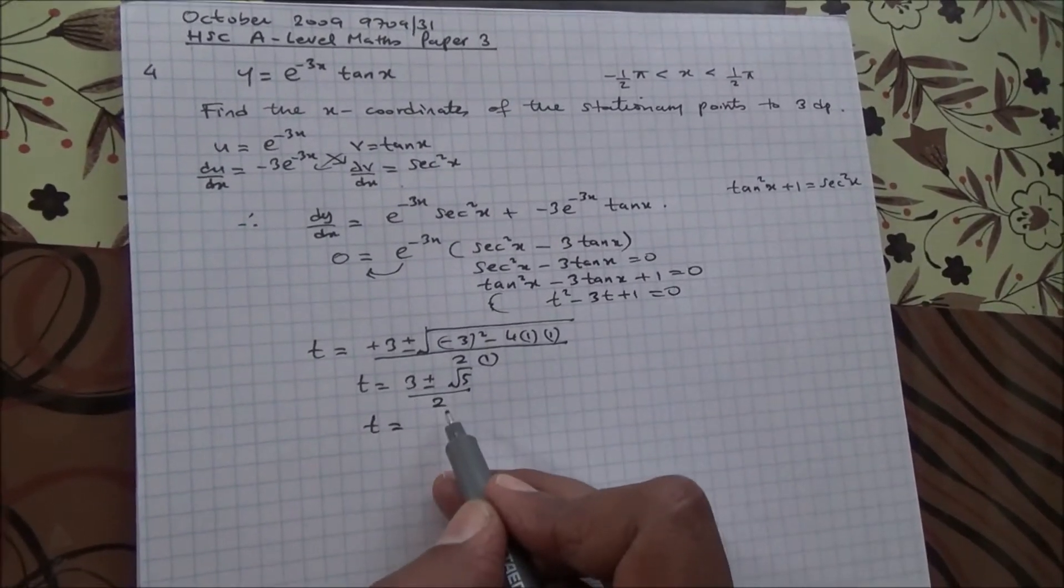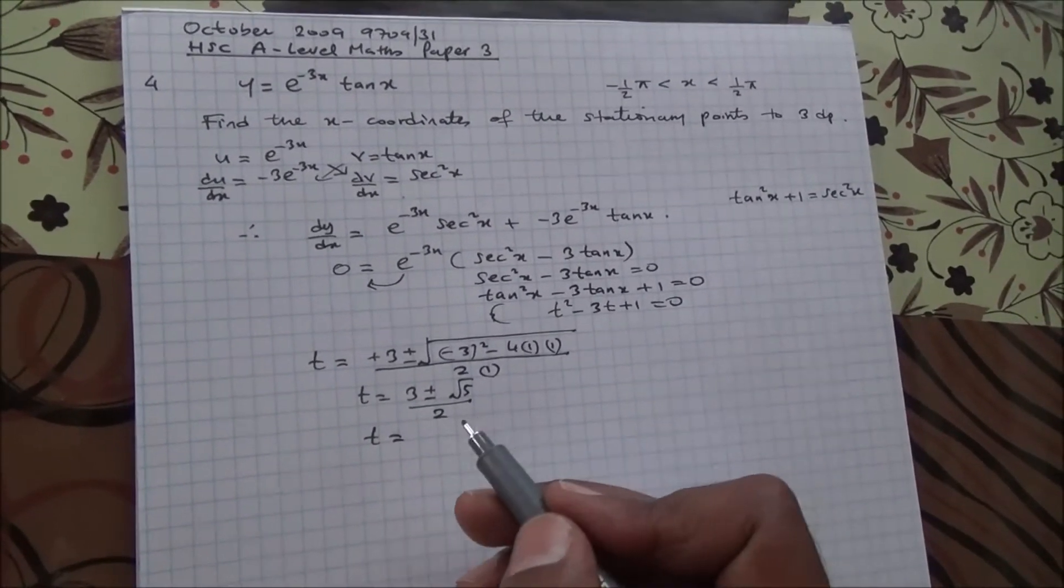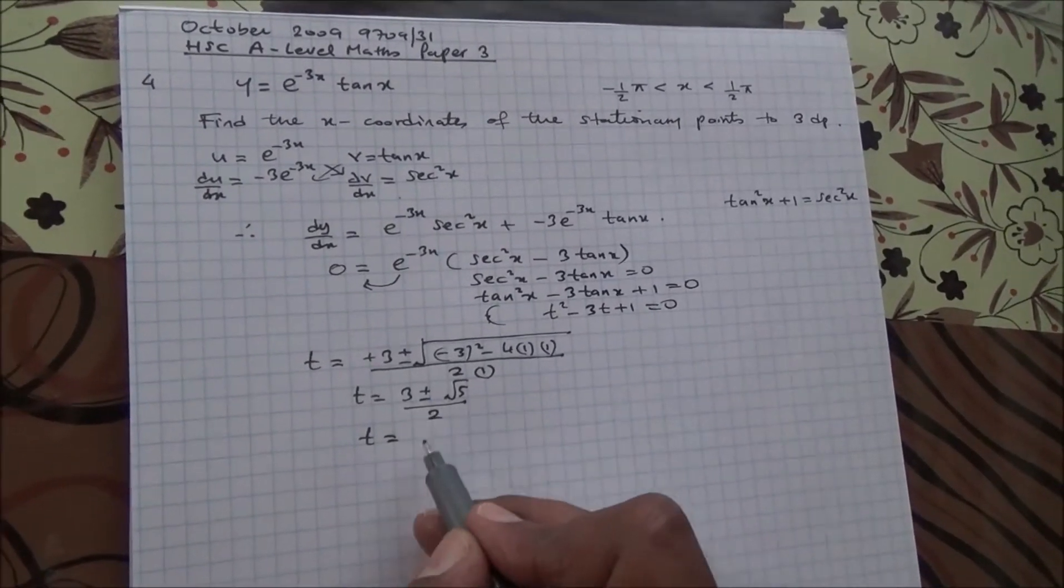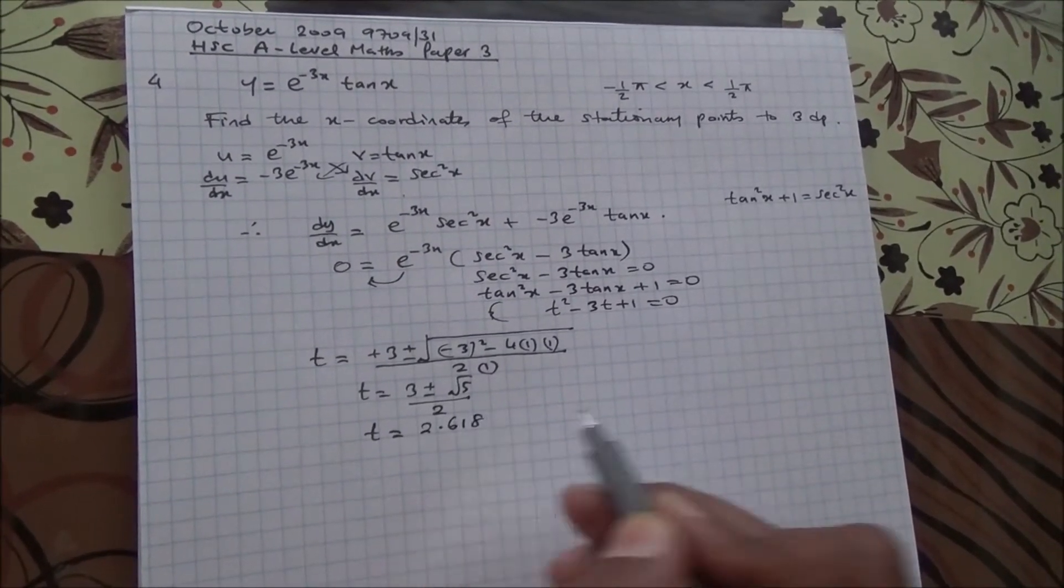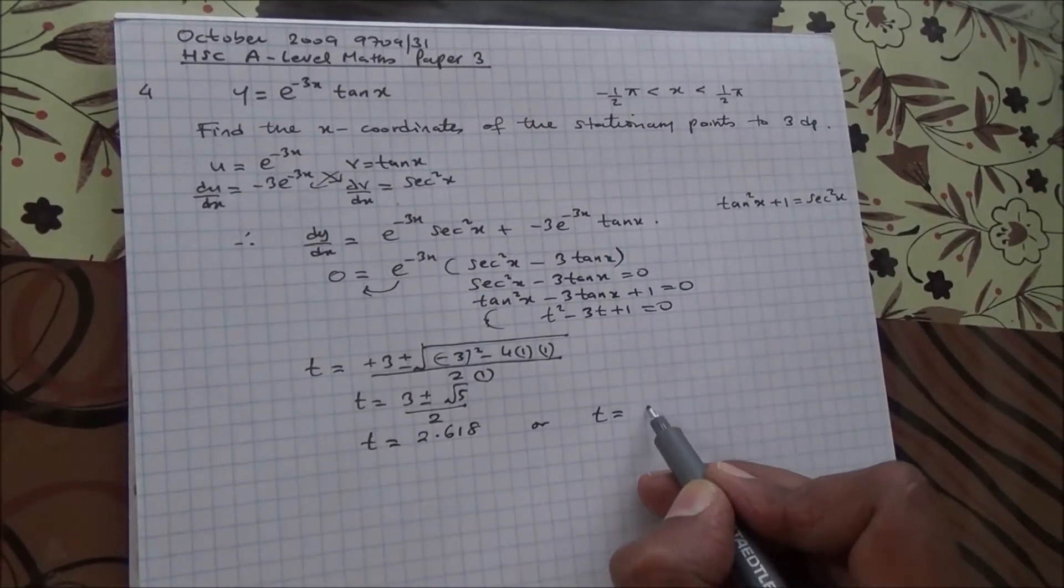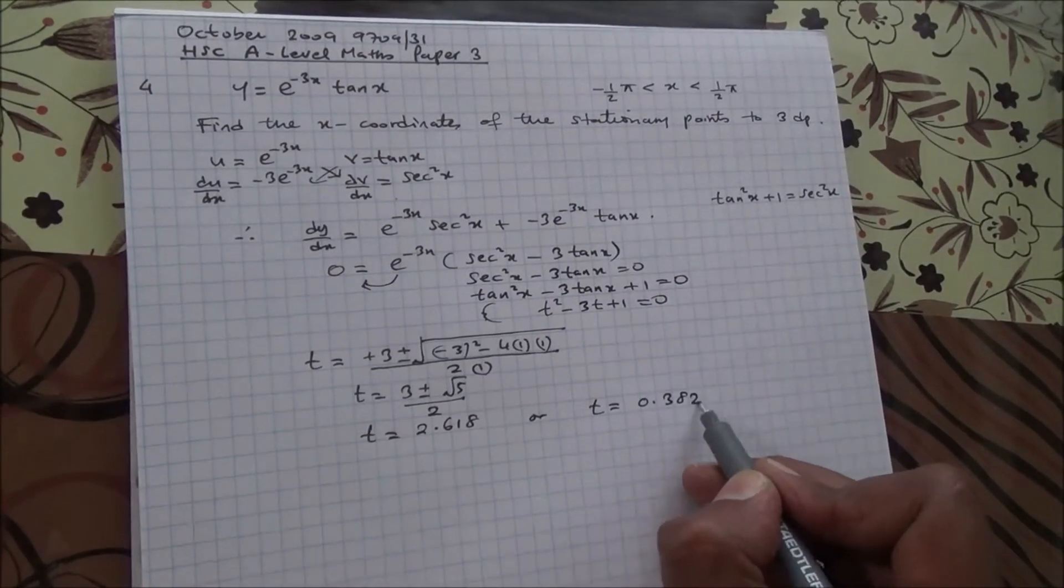Therefore, t is going to be 3 plus root 5 over 2. So, if you do that in your calculator, you're going to end up with 2.618, or t can be equal to 0.382.